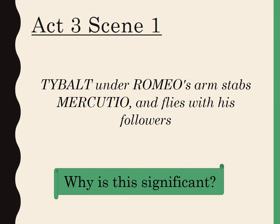Moving on to Act 3, Scene 1 — which could be argued as the climax of the play — we have the stage direction: 'Tybalt under Romeo's arm stabs Mercutio and flies with his followers.' What's interesting is the physicality of this murder. Tybalt has reached under Romeo's arm to kill Mercutio, so Romeo is in between Tybalt and Mercutio, suggesting perhaps that Romeo should have been protecting Mercutio.